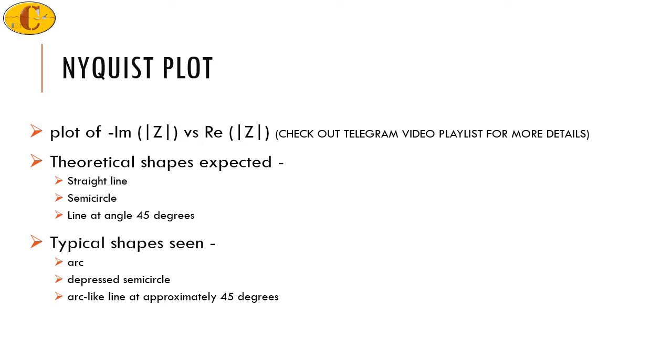In these kind of EIS Nyquist plots, the theory states that you can either have a straight line or you can have a semicircle, perfect semicircle, or you can have two semicircles.